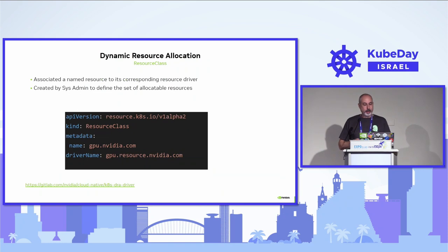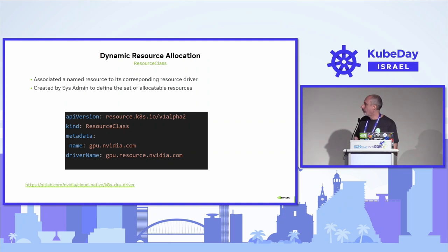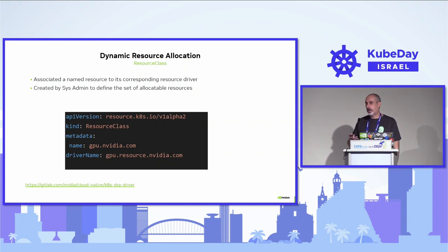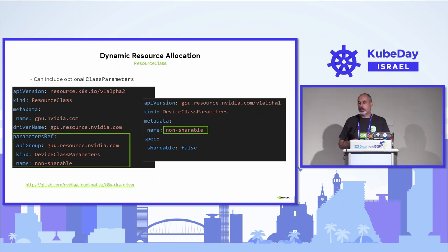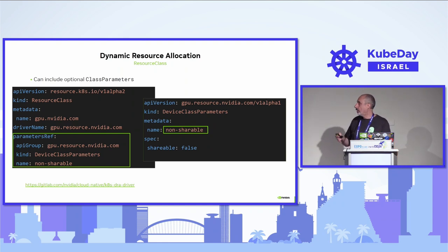Let's look at the resource class. All examples here are from an existing DRA driver for GPUs implemented by Kevin Kloss from NVIDIA — he also gave a great talk about it with Alexey Fomenko from Intel at the last KubeCon. The resource class defines a name and the DRA driver that will be bound to this resource, created by the sysadmin similar to a storage class. You can also have parameters via a reference in the form of API group/kind/name pointing to a vendor-defined CRD. In this example, the parameters specify DPUs that are non-shareable.